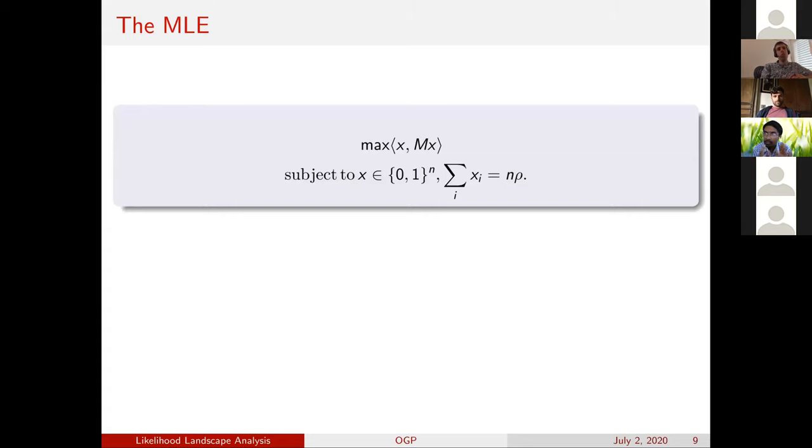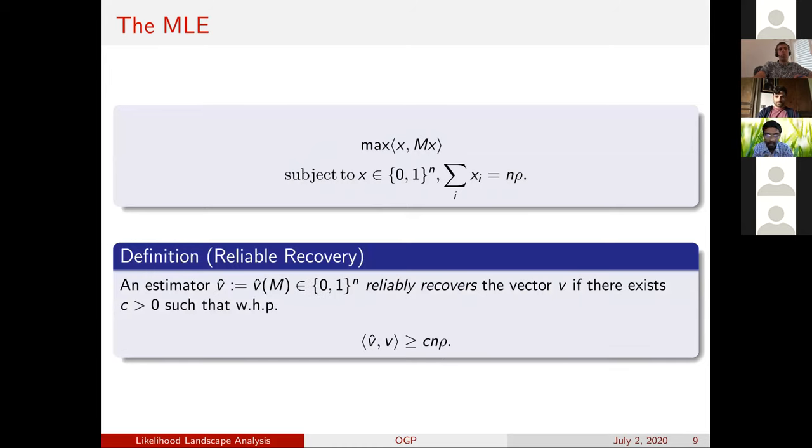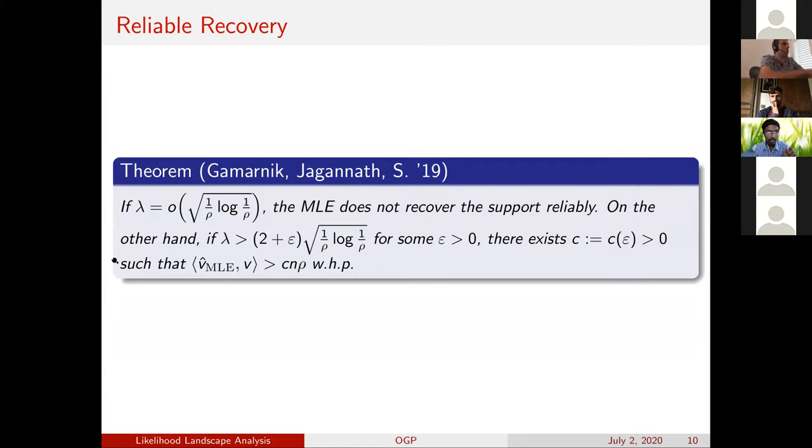If we write down the maximum likelihood in this case, it's not too hard to see that it reduces to this following problem. So you naturally try to optimize this quadratic form subject to these constraints. And the performance metric that we'll try to look at is something that we call reliable recovery in that we'll try to see whether we recover a constant proportion of the support or not. So for example, you could think of this constant as like 10% or 0.1, and then you want to know whether you recover a constant fraction of the support of this hidden submatrix. So our first result essentially identifies the information theoretic threshold required for the MLE to actually recover the support in a reliable fashion. And the important point I want you to note here is that the MLE requires signal which is of the order one over square root row, essentially.